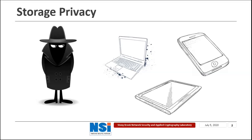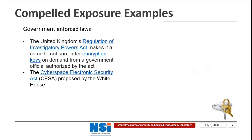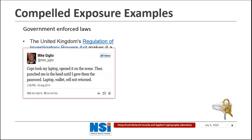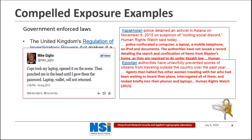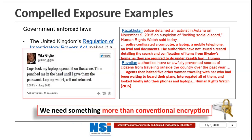Some adversaries in real life are so powerful that they can ask users to give up their encryption keys. In these cases, encryption cannot protect our sensitive data anymore. Here are some examples where users come across such powerful adversaries, such as some governments, and we can see a lot of cases reported by users who were forced to give up their encryption keys. So we need something more than conventional encryption to protect our data.